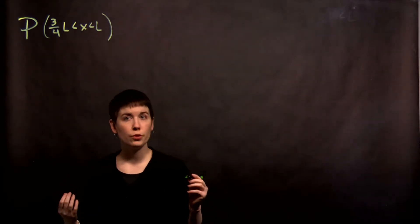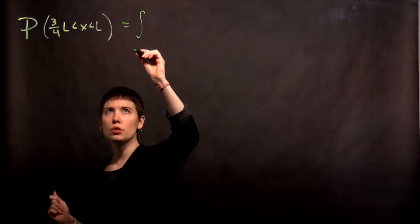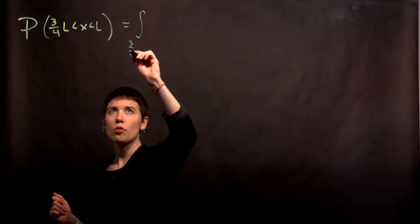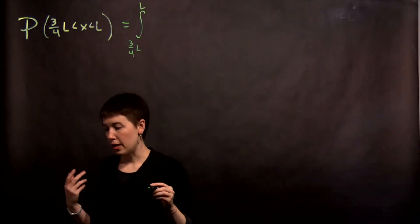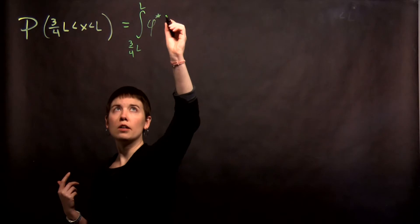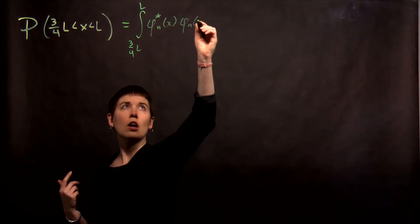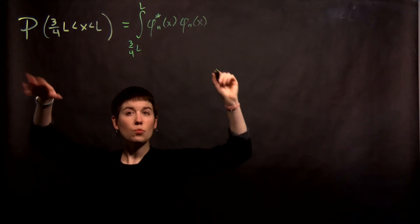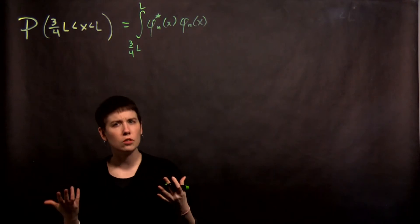So what do we do? To set this up, we say that this probability is going to be equal to the integral from 3 quarters l up to l. Then what do we write? We would write this as our complex conjugate of our quantum state as a function of x multiplied by our state. And again, I didn't say this, but this would be for an energy eigenstate, not for any particle.